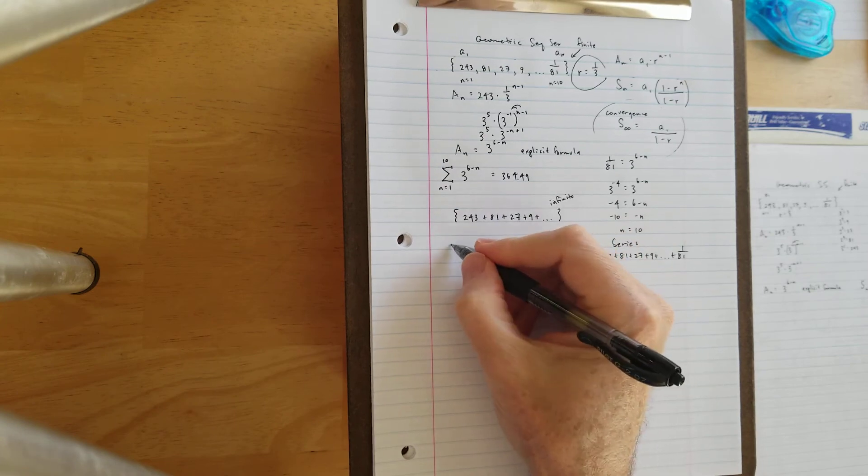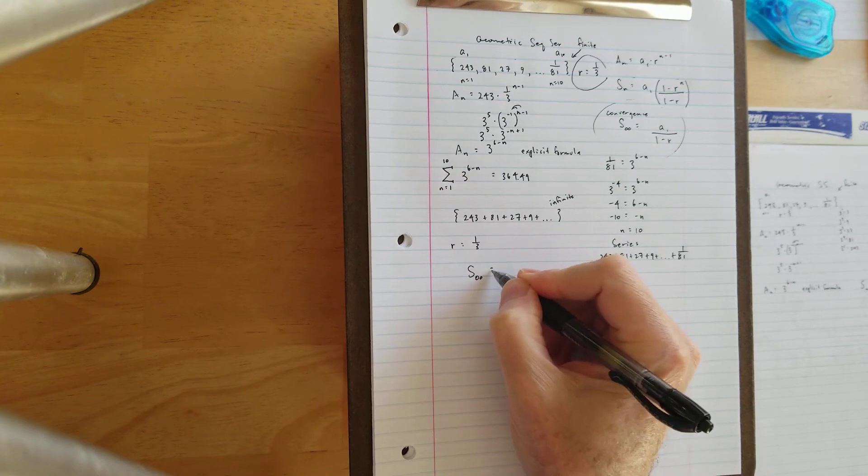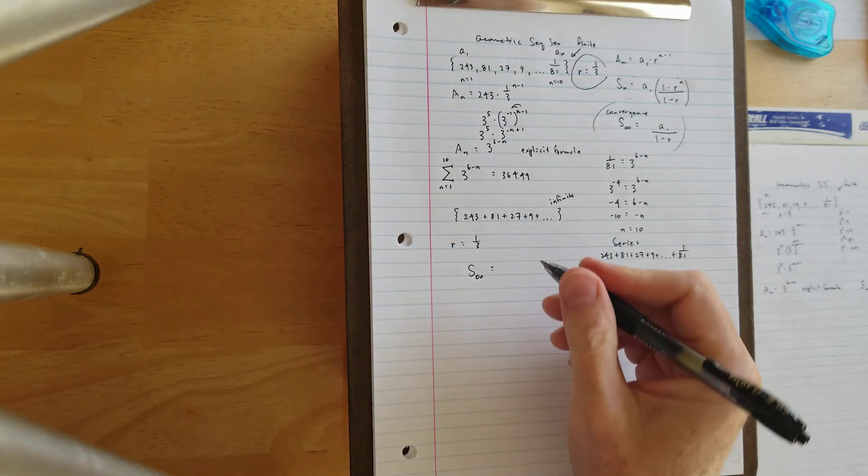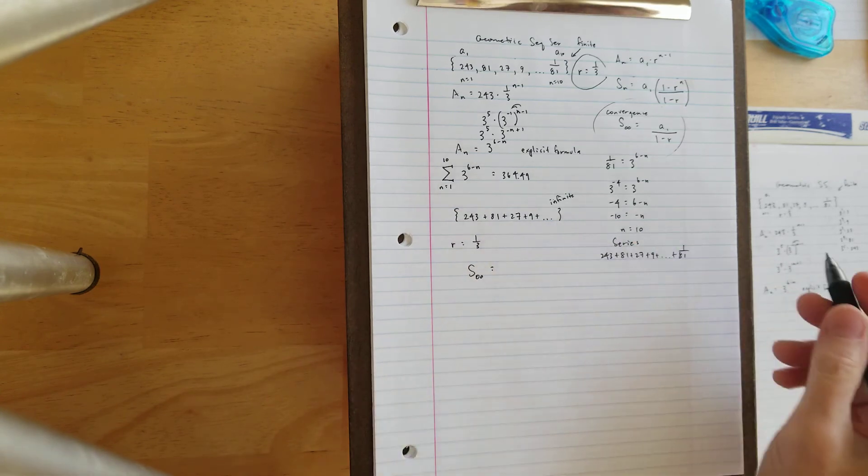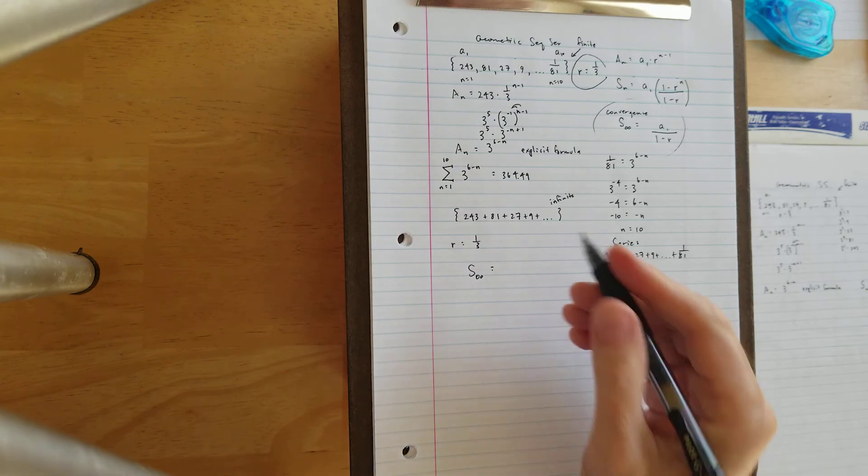So when that happens, R equals 1 third, we're just going to use our infinite sum formula to calculate the sum of that infinite series. It doesn't seem possible, but because everything decreases infinitely, it applies to the concept of limits that we just covered.